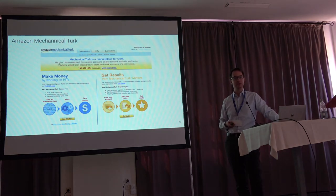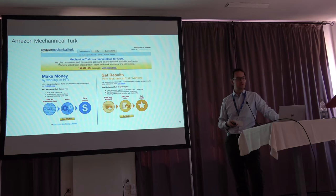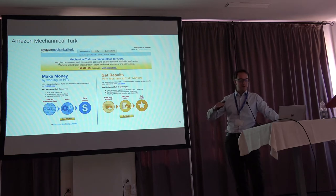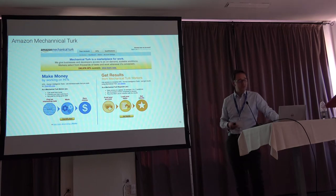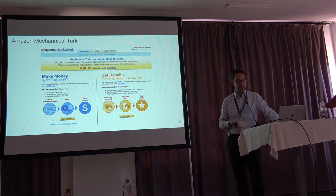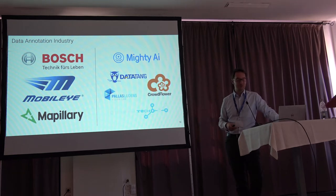You can go to Mechanical Turk and get your data labeled there. But everyone who has worked with Mechanical Turk has probably realized that the quality and quality assurance required is at a level where deep learning algorithms are already rivaling the performance of the Mechanical Turkers. So it's really difficult to get the quality actually needed to improve from the state where we're at. This led to the development of a whole annotation industry.